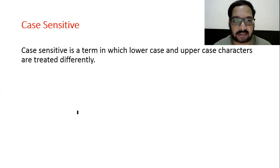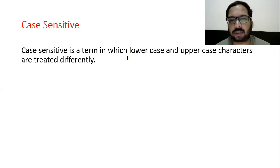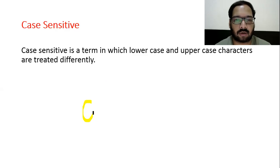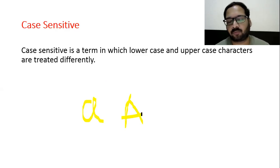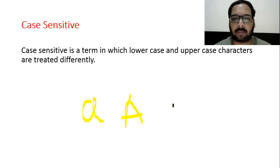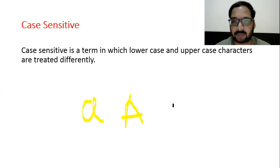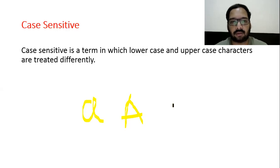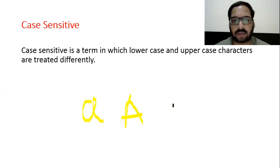Case sensitivity: case sensitive is a term in which lowercase and uppercase characters are treated differently. If you write small 'a' and capital 'A', both have different meanings. Just like passwords are case sensitive — what is written in uppercase must be typed in uppercase. C language follows the same approach, so you must be careful about uppercase and lowercase in C because it is case sensitive.